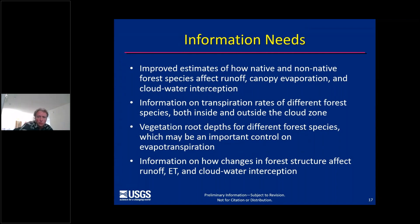Whereas we have the tool to estimate groundwater recharge, the tool is only as good as the information we put into it. We've identified a set of information needs to further refine and reduce the uncertainty in our recharge estimates. These include improved estimates of how native and non-native forest species affect runoff, canopy evaporation, and cloud water interception; improved information on transpiration rates of different forest species both inside and outside the cloud zone; vegetation root depths for different forest species, as this may be an important control on evapotranspiration; and information on how changes in forest structure can affect ET and cloud water interception.